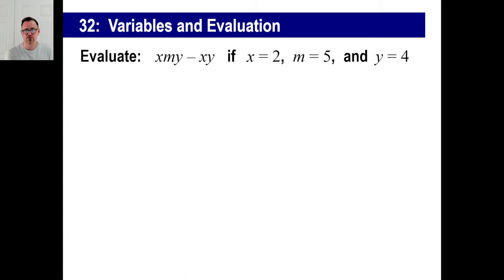Try this one. Copy this down if you want to. Pause it. Now this looks a little more complicated, but it's not. And again, if you see X and M and Y next to each other with no operational sign, anything at all, you're just going to assume that they're all being multiplied by each other.